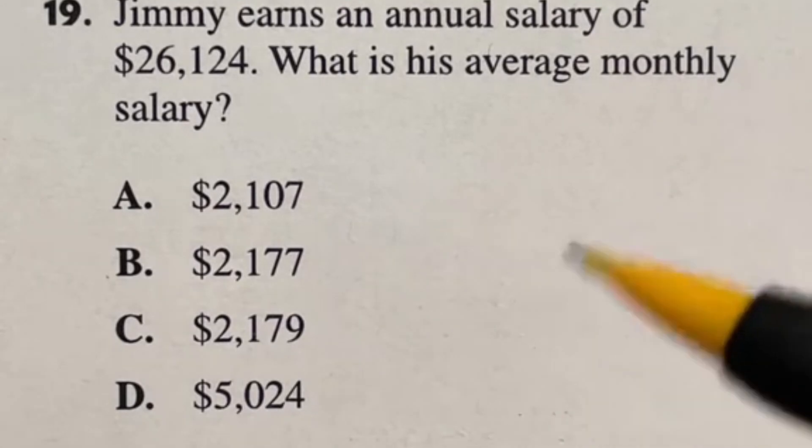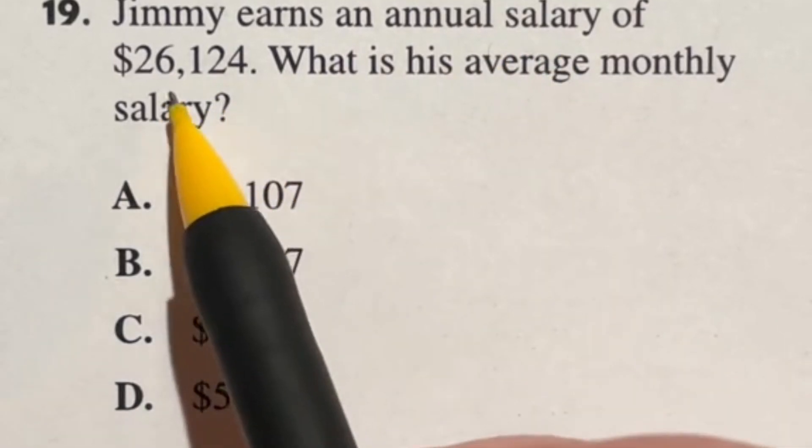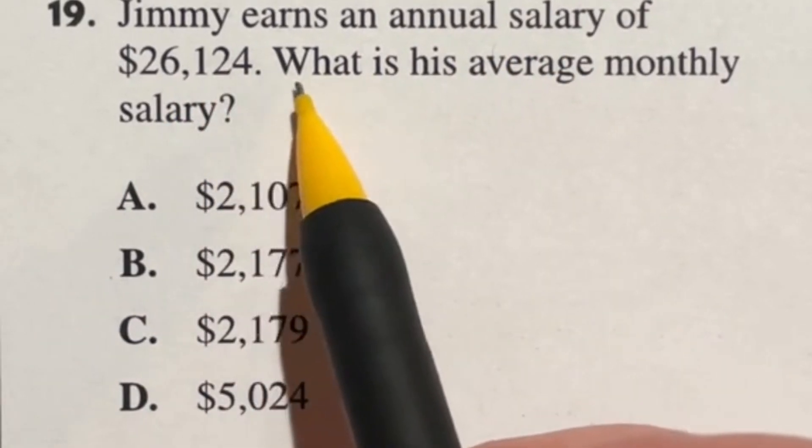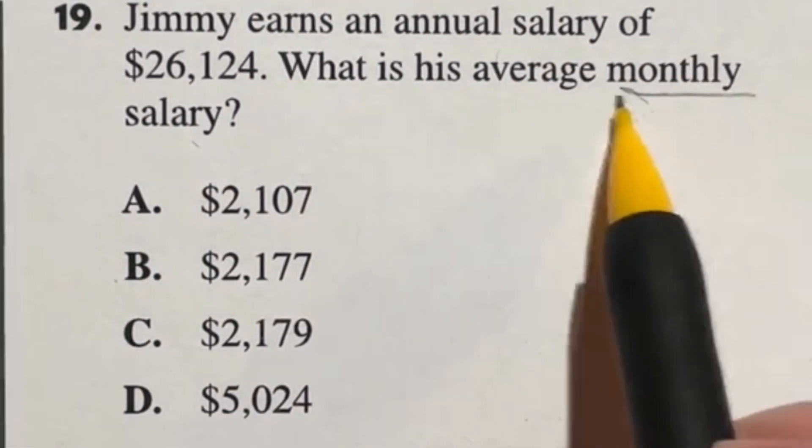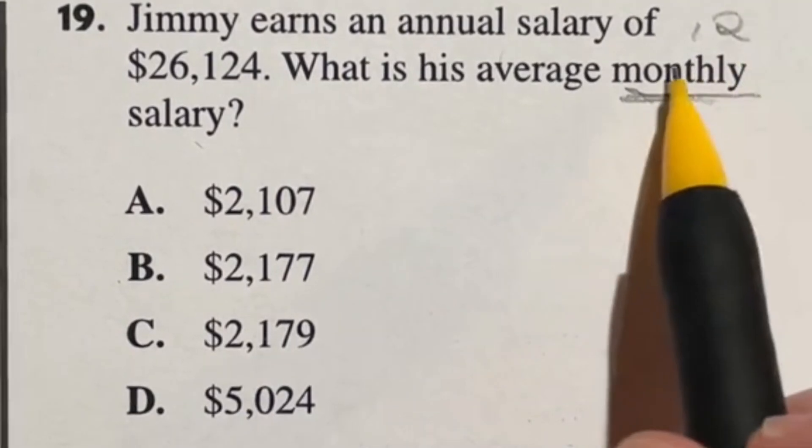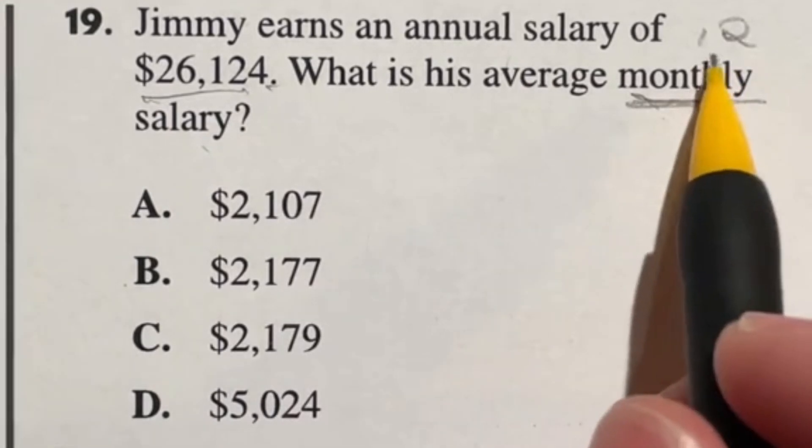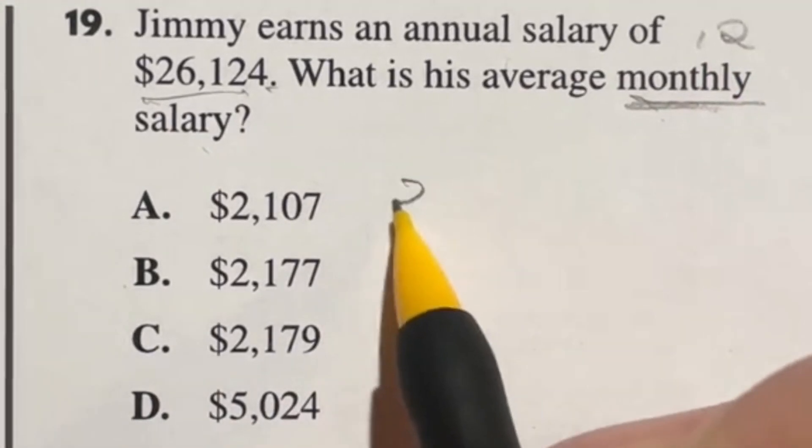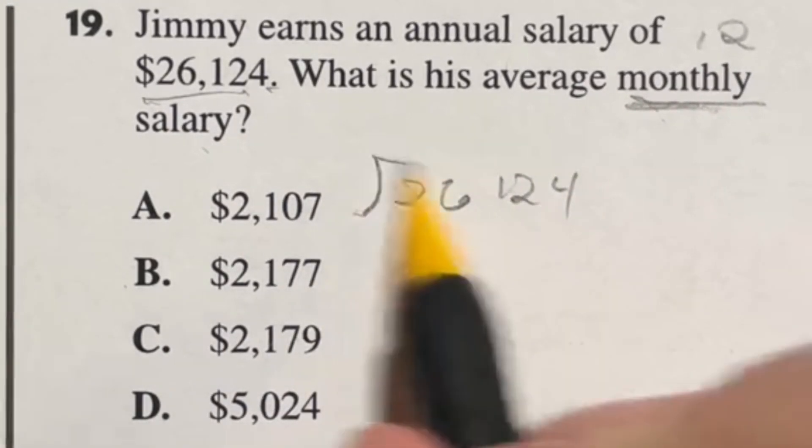Let's take a look at number 19 on the ASVAB. Jimmy earns an annual salary of $26,124. What is his average monthly salary? Now obviously how many months are there in a year? That's right, 12. So that means that we need to take his total salary and divide that number by 12. So if we do 26,124 we're going to divide that number by 12.